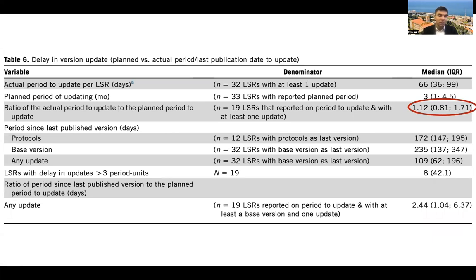Interestingly, when we explored how reliable was the update in terms of sticking to the planned period to update, we calculated the ratio of the actual period to update over the planned period to update. There was variability in the planned period for update, but that ratio was very close to 1, meaning that whatever they promised in terms of how frequently they would update, they were able to deliver maybe with a slight delay, about 12% delay in terms of period of update. I would say that's very impressive.